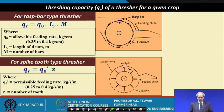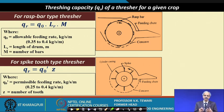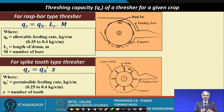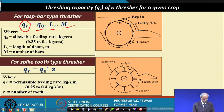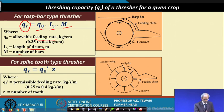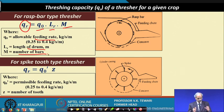What is the threshing capacity of a thresher for a given crop? The threshing capacity depends on the feeding rate at which you feed the material, the length of the drum, and the number of bars. Threshing capacity is given as Q = Q₀ · L · R · M, where Q₀ is the allowable feeding rate, L is the length of the drum in meters, and M is the number of bars — this gives the threshing capacity of a rasp bar type thresher.